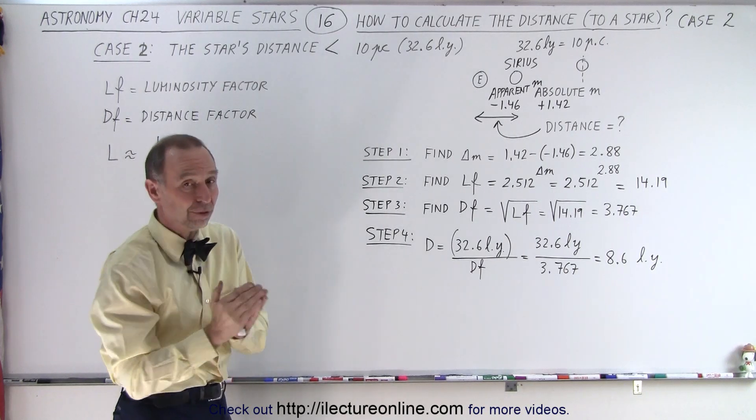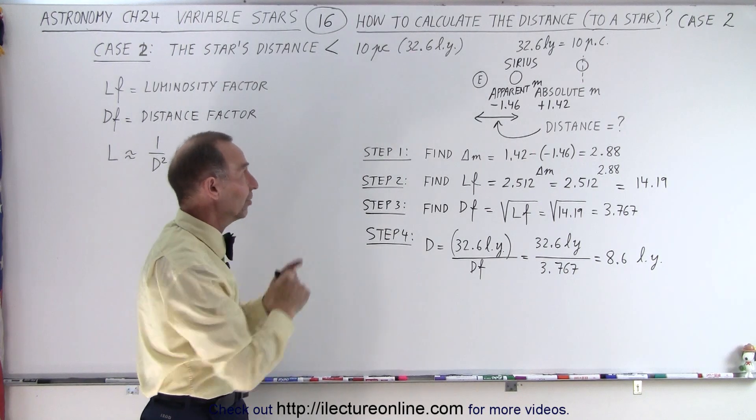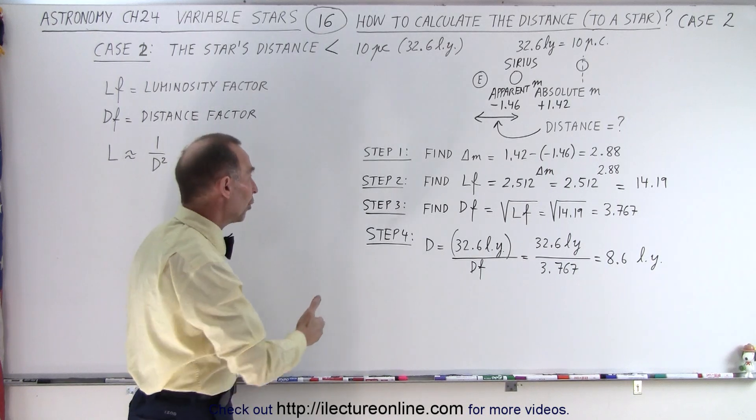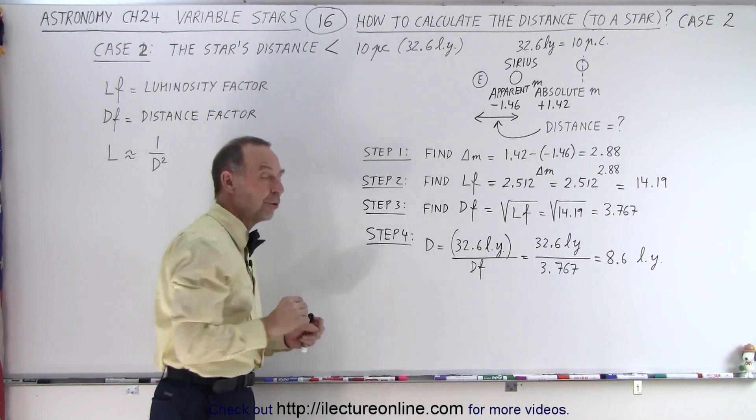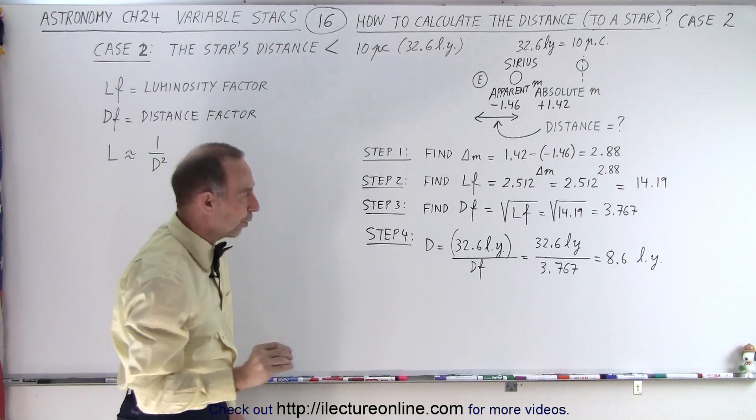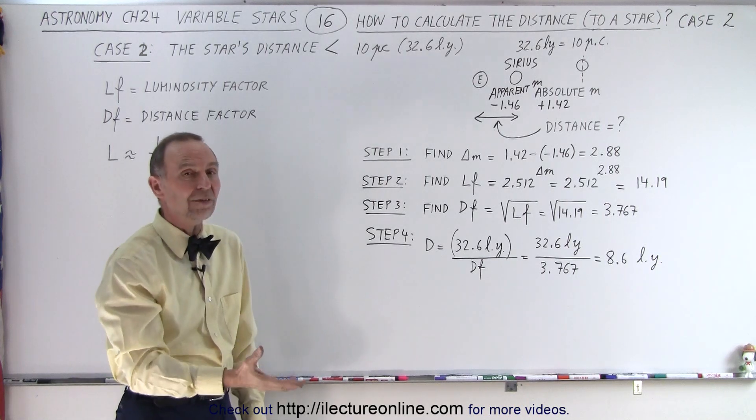So how do we determine, based upon those two numbers, the distance? It turns out the steps are almost identical to what we did before, except step number four. Instead of multiplying, we have to divide.